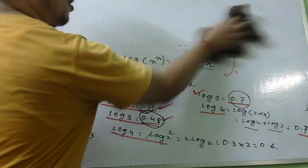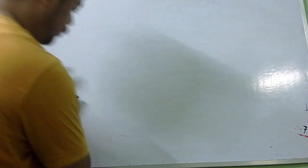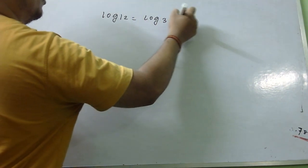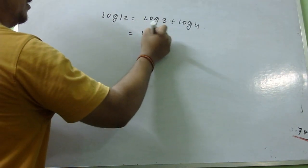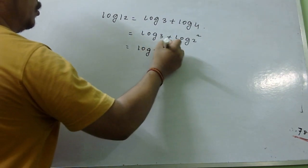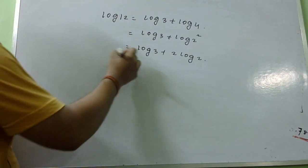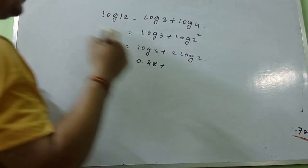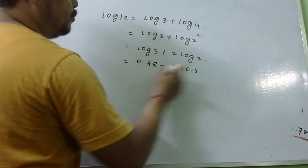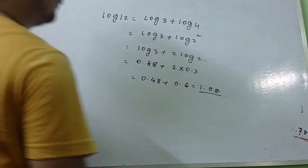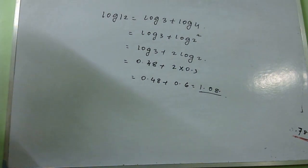If we get log 11 or log 13, how do we find the values? For log 12, there is no problem: log 12 equals log 3 plus log 4, which is log 3 plus 2 log 2. That gives 0.48 plus 0.6 equals 1.08.